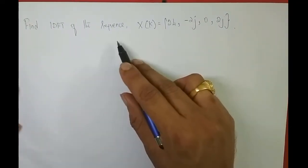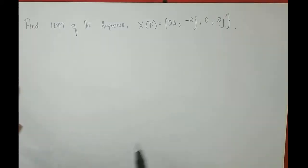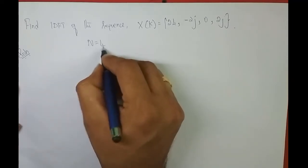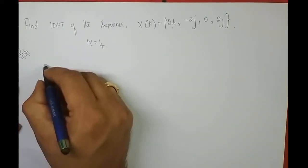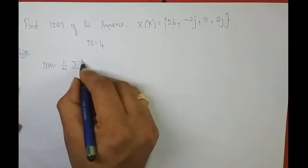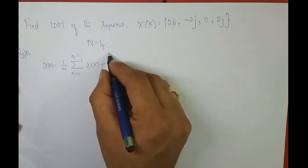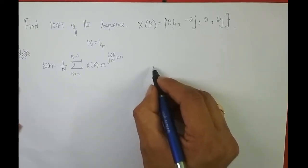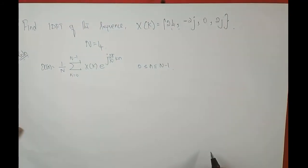Since they haven't specified how many points, the sequence length is 4, so I have to find the 4-point IDFT. Here N is equal to 4. The formula to find IDFT is: x of n equals 1/N times the summation from k=0 to N−1 of X[k] times e^(+j2π/N × k × n), where n varies from 0 to N−1. This is the IDFT formula derived from frequency domain sampling.